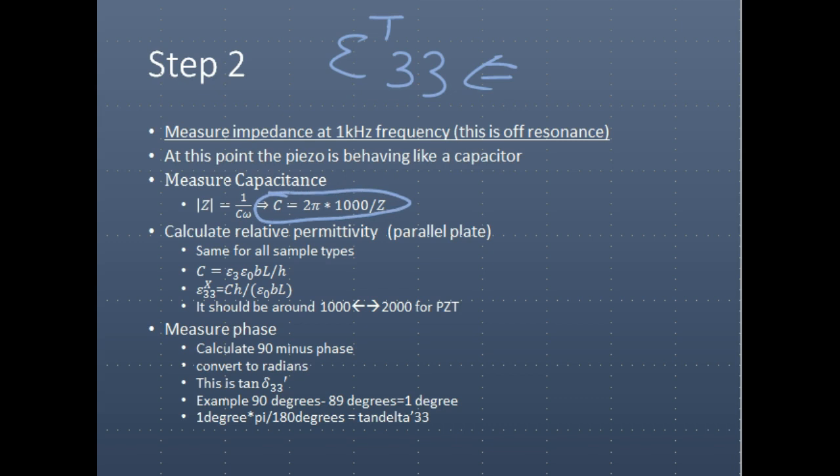After which, you can calculate the relative permittivity, assuming a parallel plate capacitor. Following these equations, you can calculate the relative permittivity, which should be between 1000 and maybe 3000.